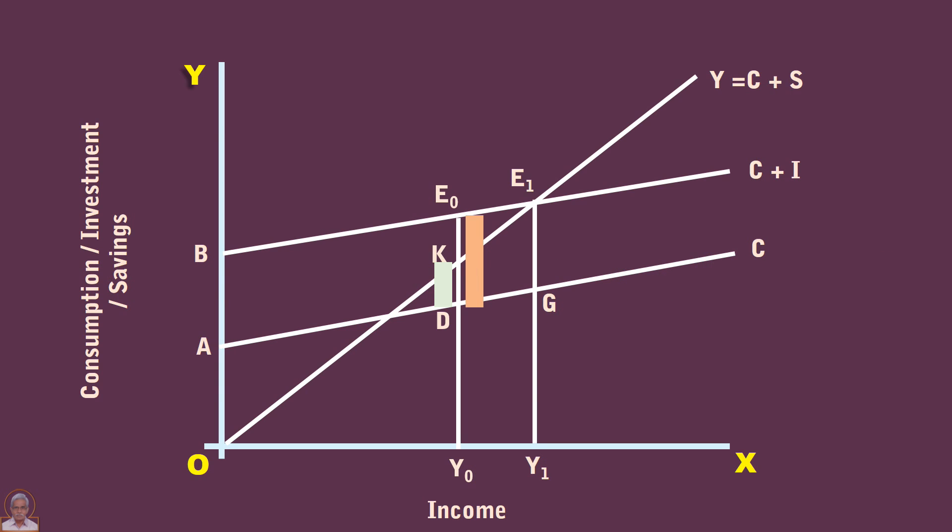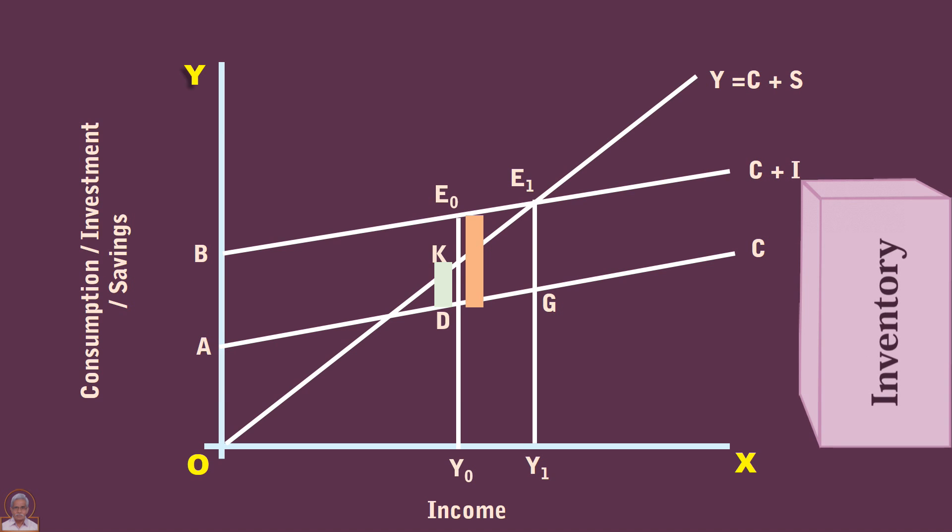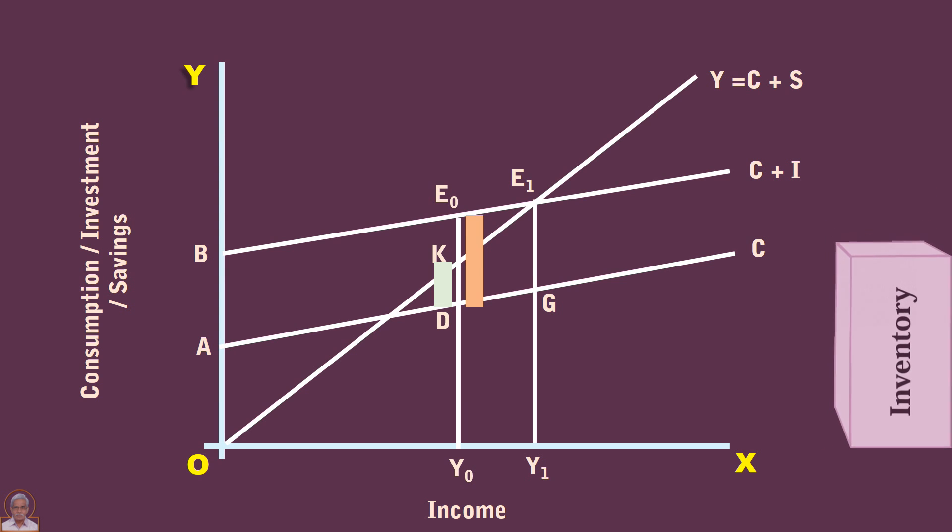To meet the excess demand KE0, businessmen will use their inventories. There will be a reduction in inventories. In order to stop further decline in their inventories, businessmen will increase production by undertaking new investment.